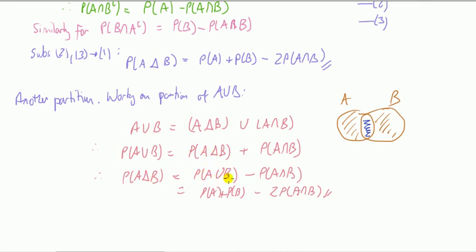Now I'm using a result that we've proved before. This is probability of A union B minus probability of A and B, and this is where the extra probability of A and B comes in then to give me two lots.